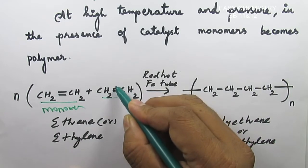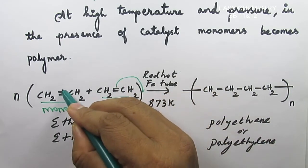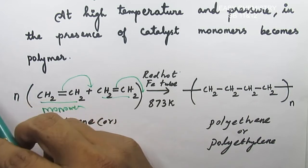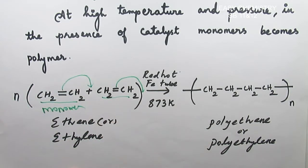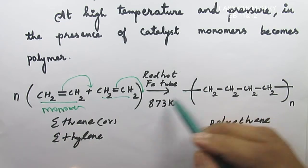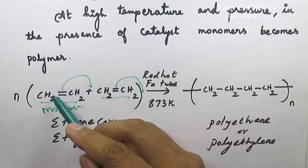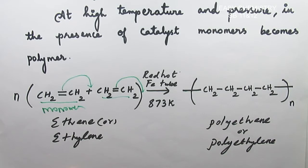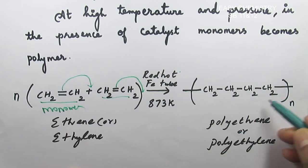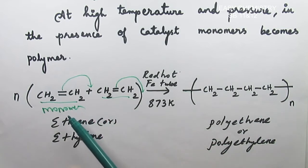Let's break the double bond and convert it to a single bond. When we change the bond and repeat this thousands of times, the monomer becomes polyethylene or polythene.